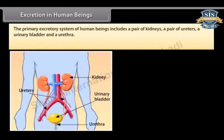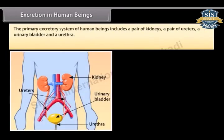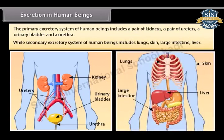The primary excretory system of human beings includes a pair of kidneys, a pair of ureters, a urinary bladder, and a urethra. The secondary excretory system of human beings includes lungs, skin, large intestine, and liver.